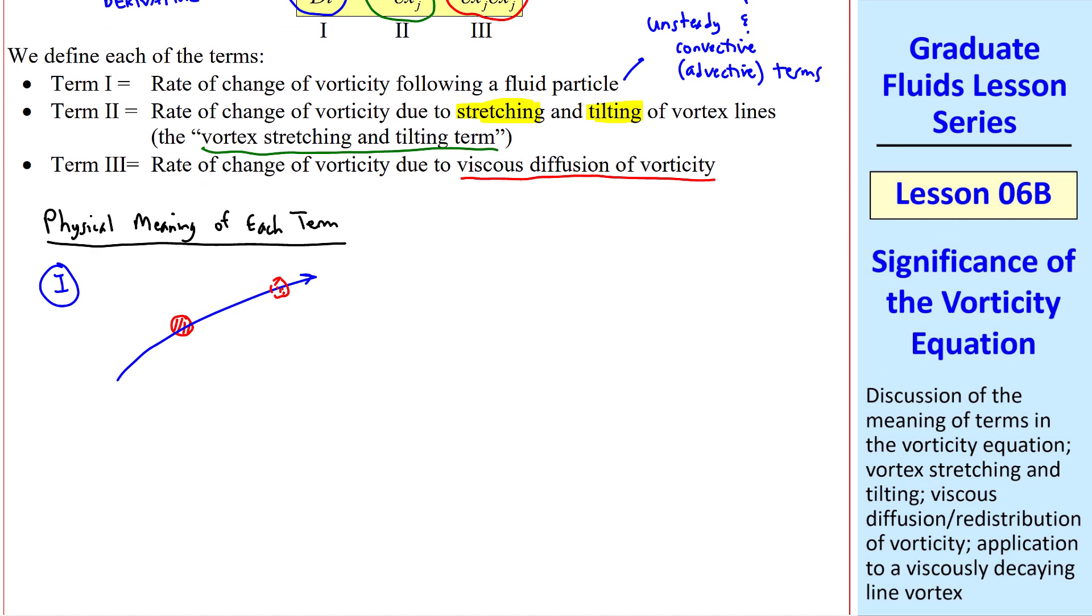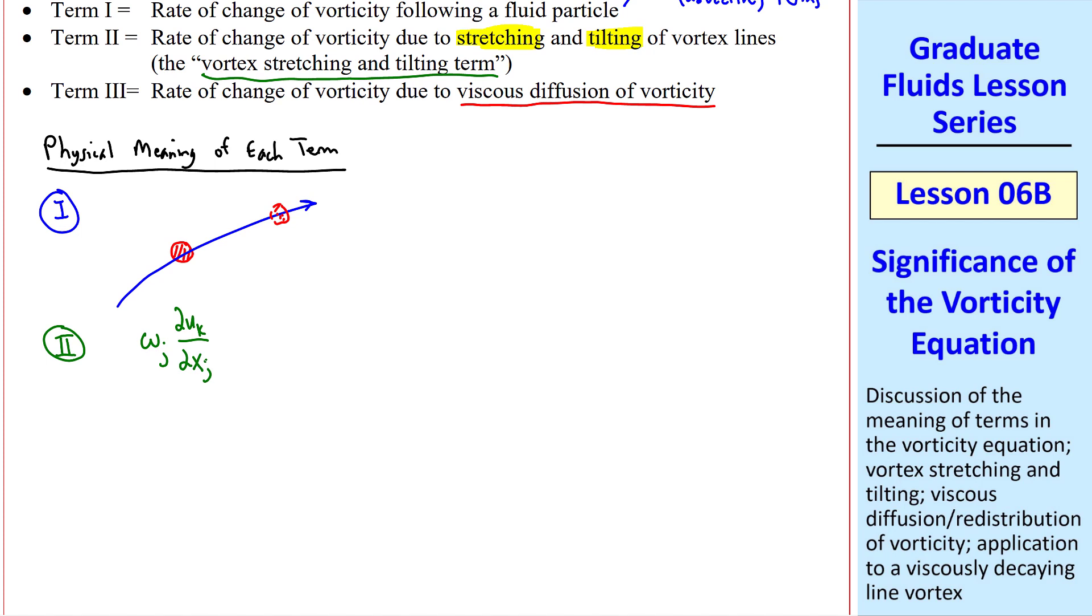Term 2 is the vortex stretching and tilting term. All of these terms are vectors, with k being the free index and j being the repeated or dummy index. In vector notation, this is omega dot del acting on u. We'll use both tensor and vector notation in these discussions. What do we mean by vortex stretching?